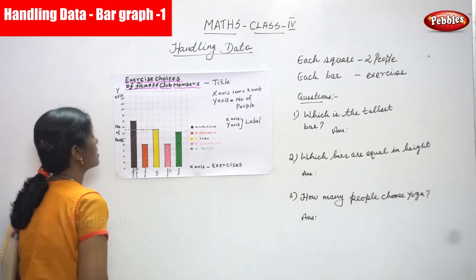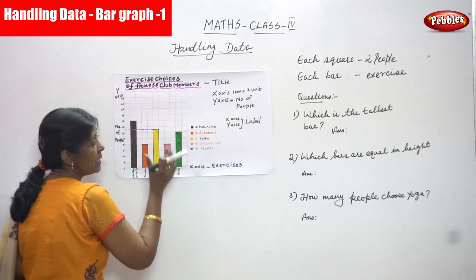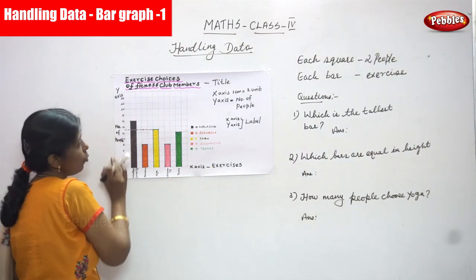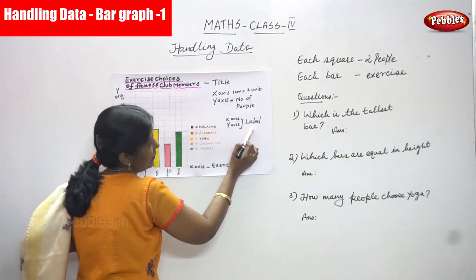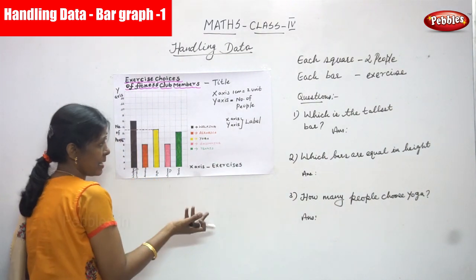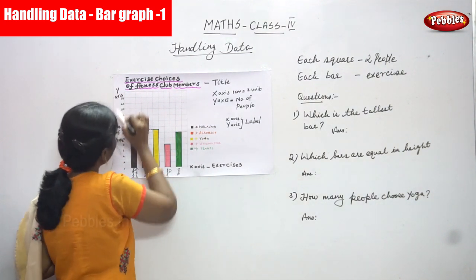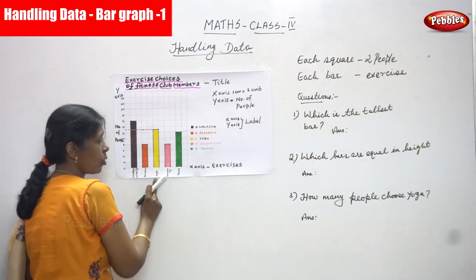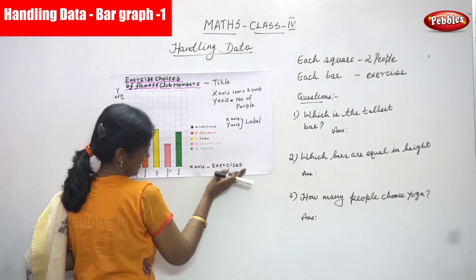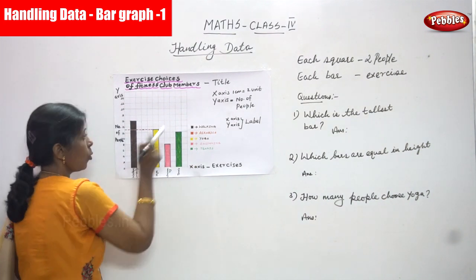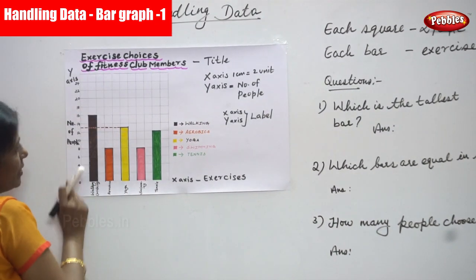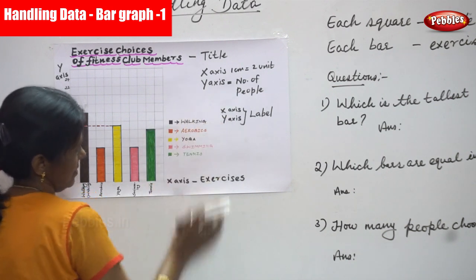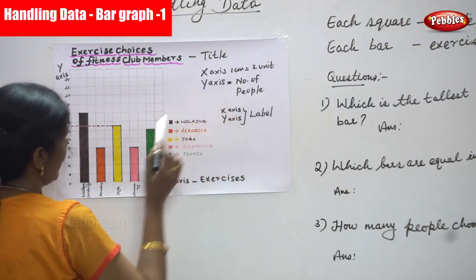I've given different colors to represent the different exercises clearly. The exercises chosen by the people are taken on the x-axis, and the number of people is taken on the y-axis. The x-axis is a horizontal line and the y-axis is a vertical line. Together, x-axis and y-axis are combined as a label.